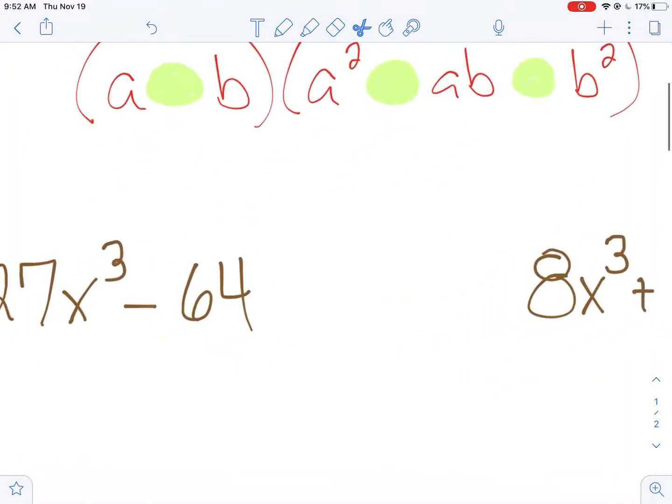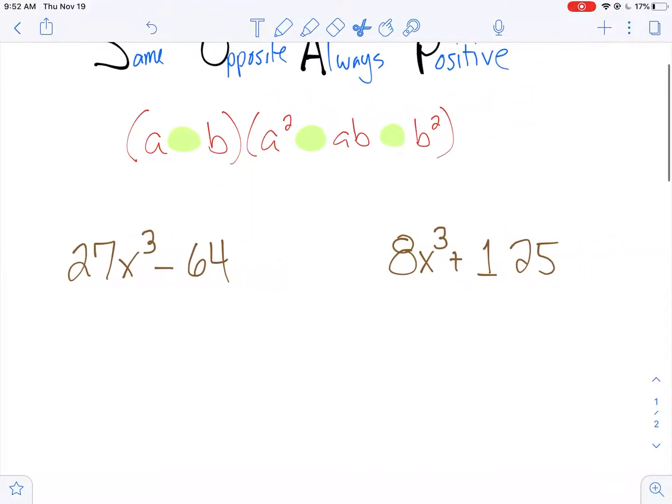You'll notice here I have 27x³ - 64. My first step is I want to find the cube root of both of these. Cube root of 27x³ is going to give me 3x, that's going to be a. Next I want to find the cube root of 64. That's going to be 4, which will be b.